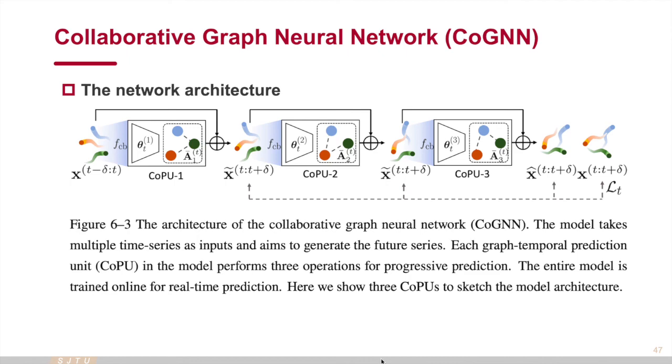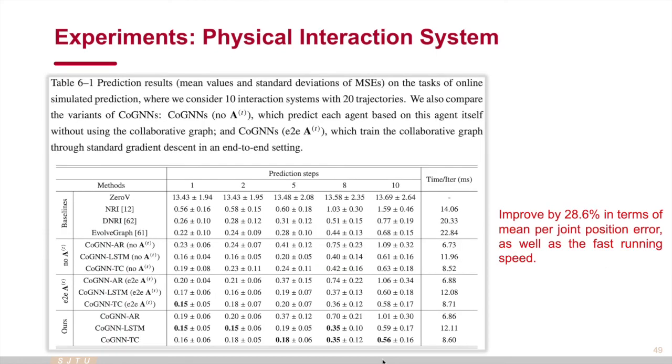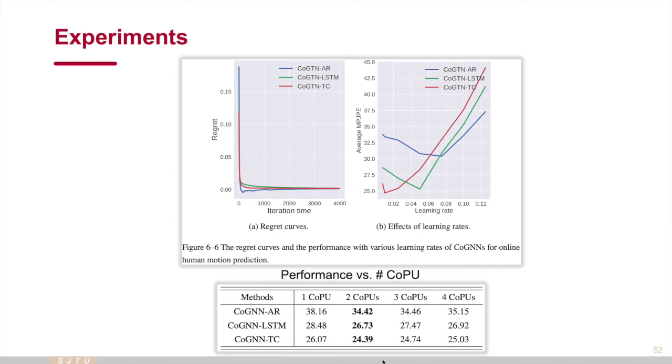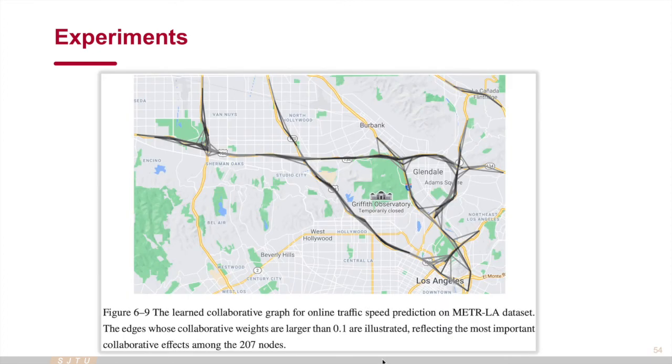We conduct experiments on three scenarios, including simulated particle system prediction, human motion prediction, and traffic speed prediction. Empirical results show the effectiveness of our methods. This is a converged curve in the training process, the effects of learning rates, and the analysis of model architectures. We visualize the learned collaborative graphs. These graphs are different but reasonable on different actions, as well as the graph could evolve during the online learning process. This is a learned traffic graph on the map.